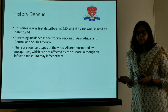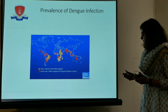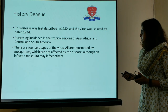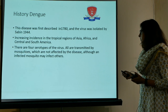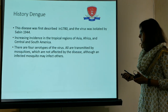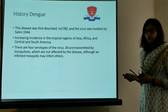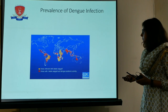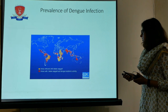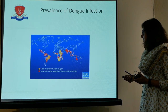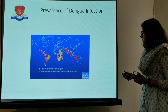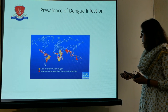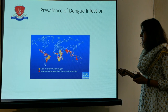What is the history of dengue? Dengue was first described in 1780 and the virus was isolated by Sabin in 1944. There is an increased incidence in the tropical regions of Asia, Africa, Central and South America, and India, which is endemic for dengue fever. There are 4 serotypes of this disease. This pictorial world map diagram shows in red the areas with epidemic or endemic activity, which includes India, neighboring countries, parts of Australia, South America, and Africa.